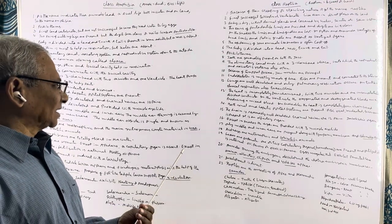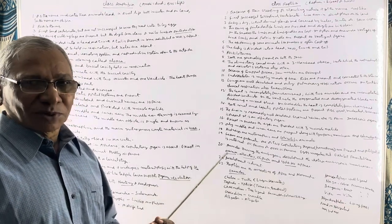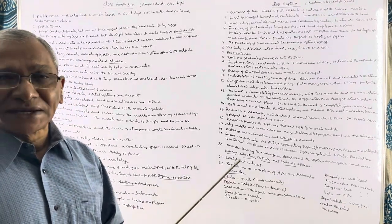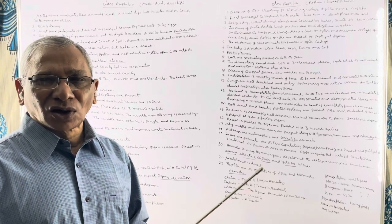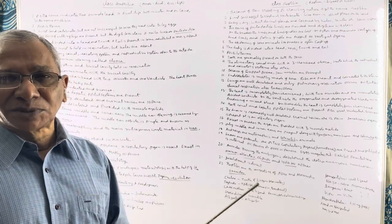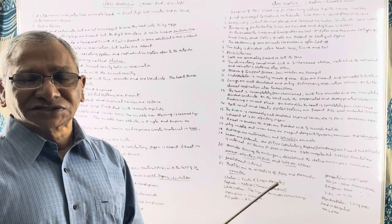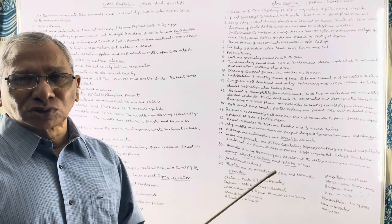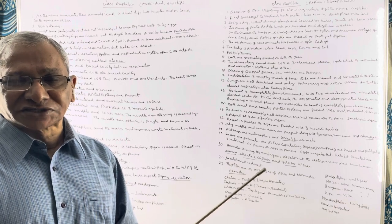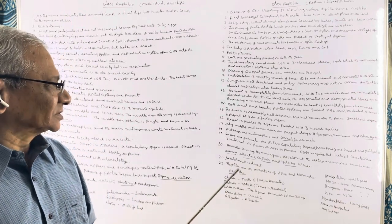Coming to the brain, it is reasonably well-developed and the cranial nerves are 12 pairs. Remember, in all amniotes — meaning reptiles, birds, and mammals — the cranial nerves are 12 pairs. In all anamniotes — meaning amphibians and fishes — the cranial nerves are only 10 pairs.